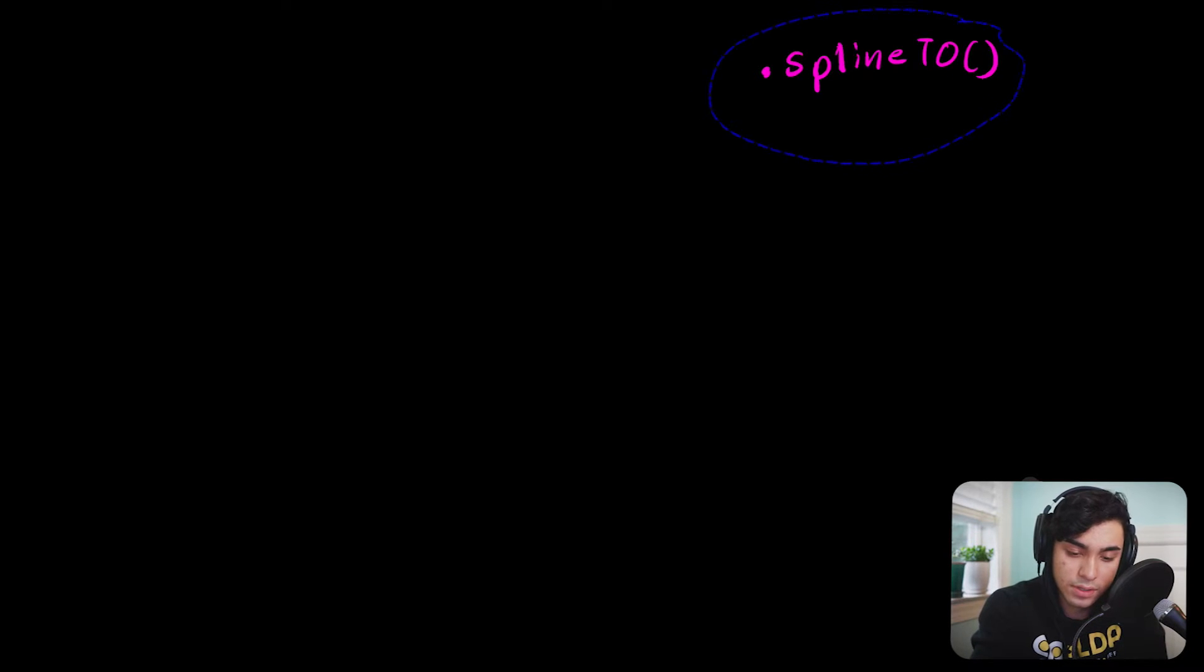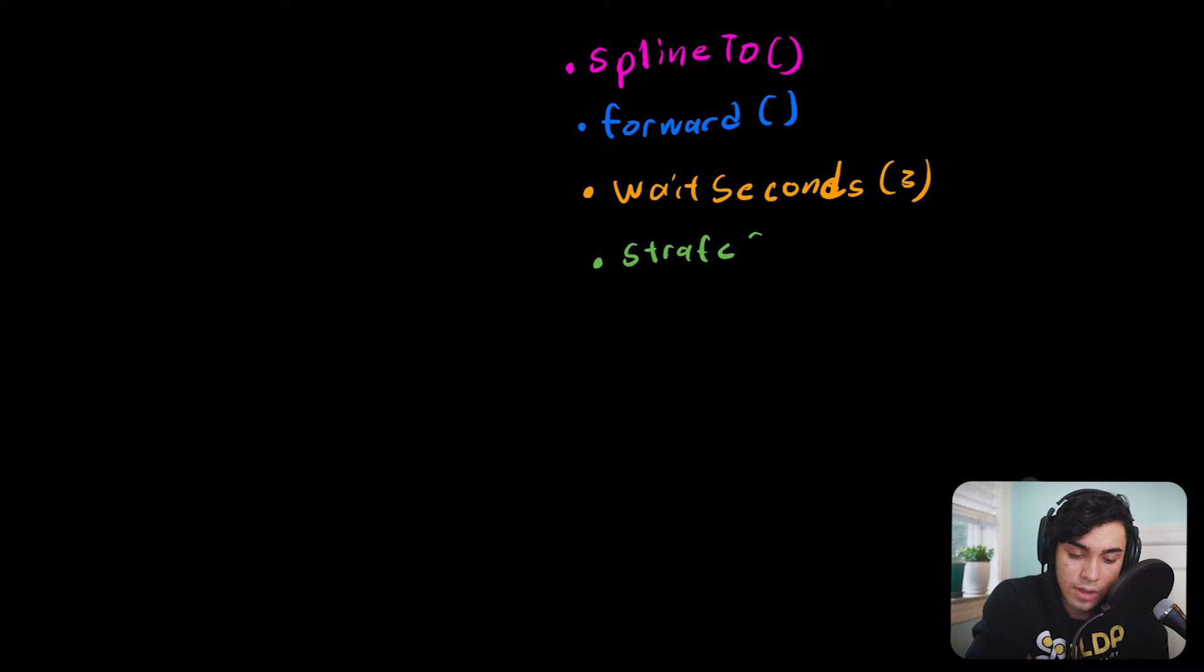Let's make up a trajectory. We have a spline to, spline to. Actually, let's move this over a bit. Right there. We have our spline to. Let's do a dot forward. And then we have a wait seconds. We're waiting three seconds in that. Then we have a dot strafe. So this is a single trajectory sequence. We have a spline. We're splining somewhere, then we go forward and then we wait for three seconds and then we strafe.